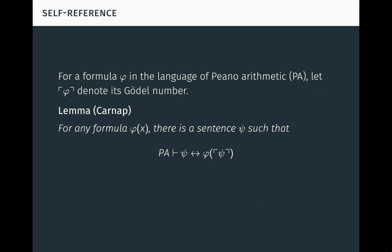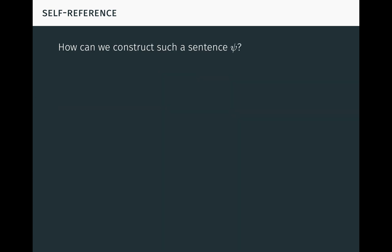For any formula phi with one free variable x, there is a sentence psi such that Peano arithmetic proves the equivalence psi if and only if phi of psi, where we are here substituting the Gödel number of psi for the free occurrences of x in phi. Intuitively, psi says I have property phi. Up to provable equivalence, psi is a fixed point for the operation of substitution into phi. So, how can we construct such a sentence psi?